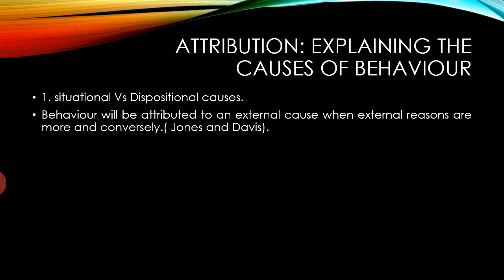The first theory is Situational versus Dispositional Causes, proposed by Jones and Davis in 1961. According to this theory, if the cause of a behavior is external, external reasons will be attributed. If the cause is internal, internal dispositional variables will be attributed. Behavior will be attributed to an external cause if external reasons are more likely or plausible. Conversely, behavior will be attributed to dispositional factors like personality variables when external causes are unlikely and internal causes are more prominent.